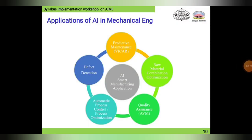Coming to the next slide: application of AI in mechanical engineering. As we know, AI is widely used everywhere, but since we are studying mechanical engineering, we will correlate our AI study with mechanical engineering. With the help of this slide, we can see the AI smart manufacturing application, which is located in the center with a gray circle.